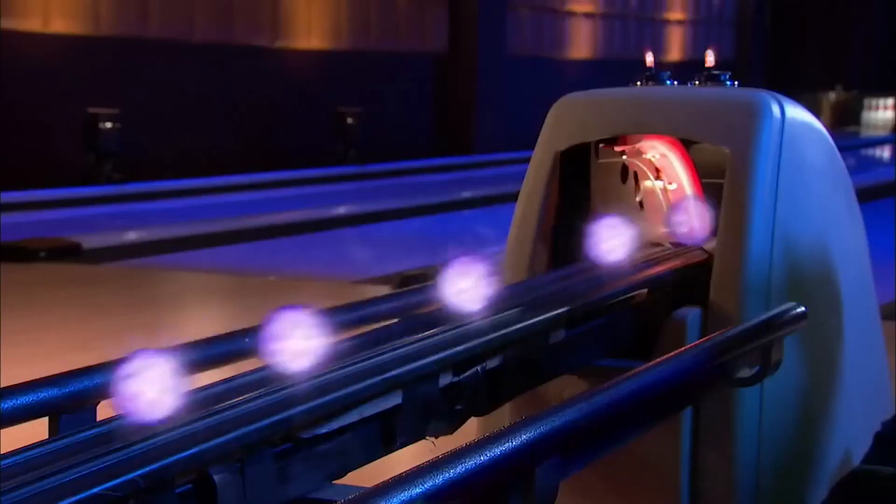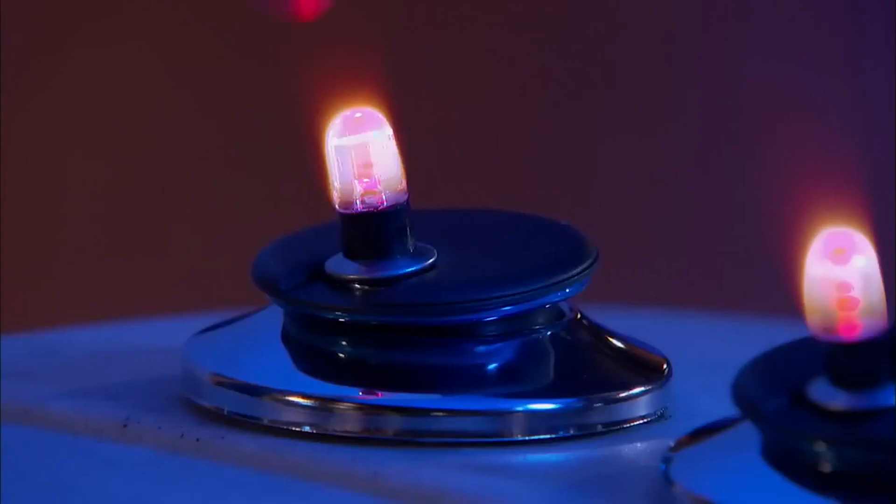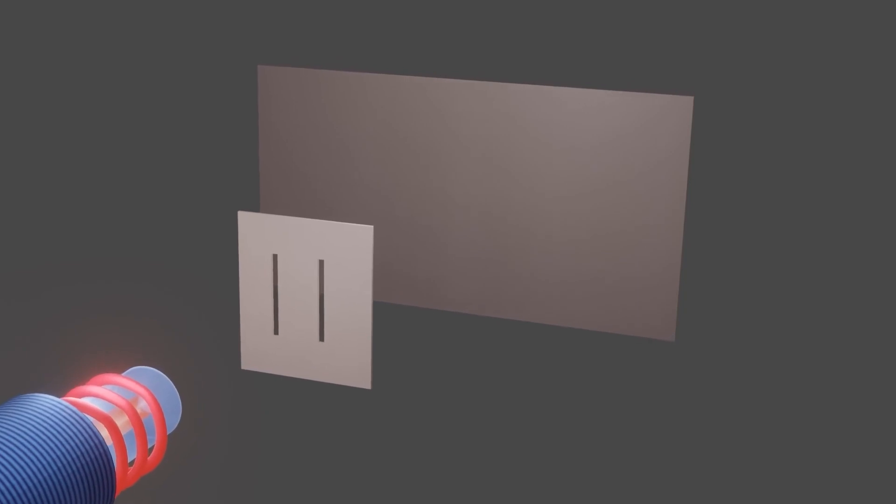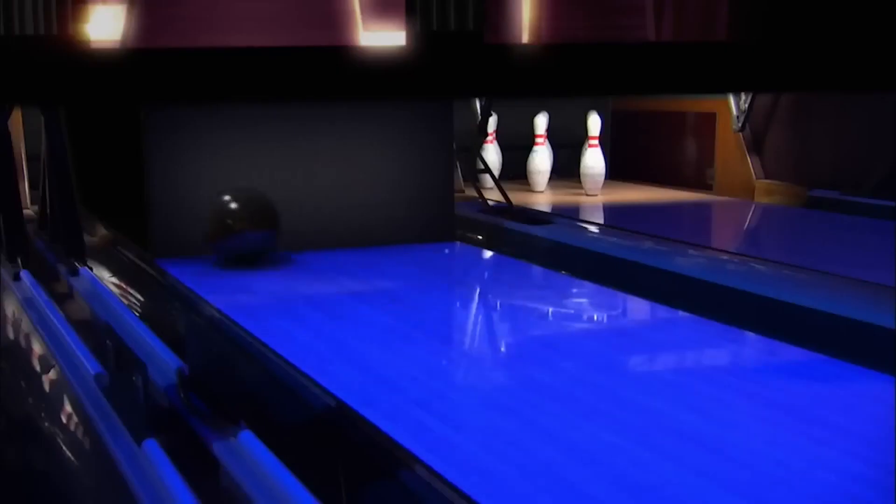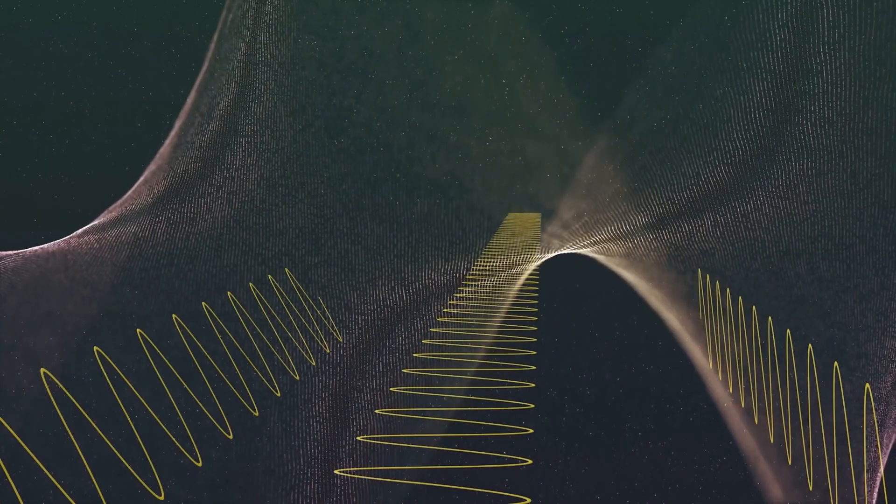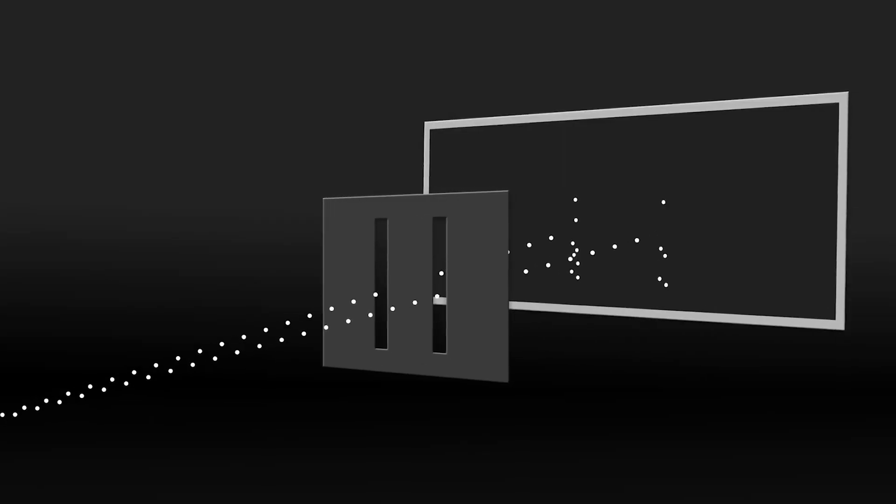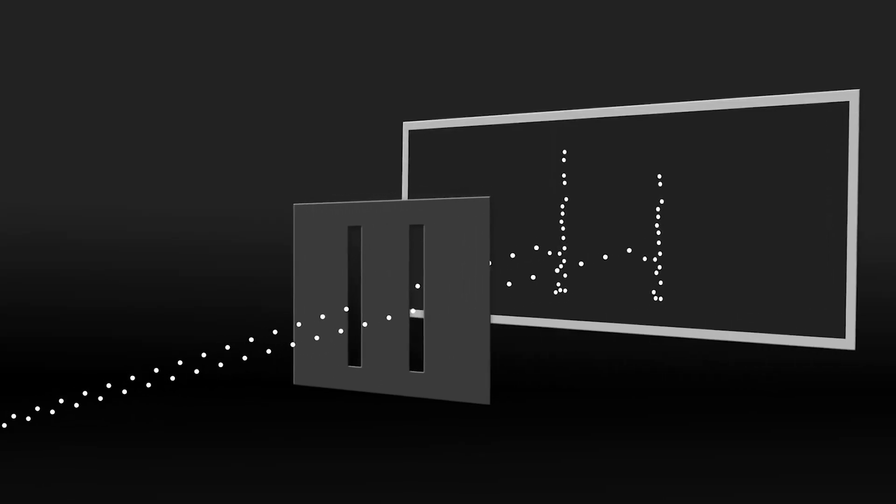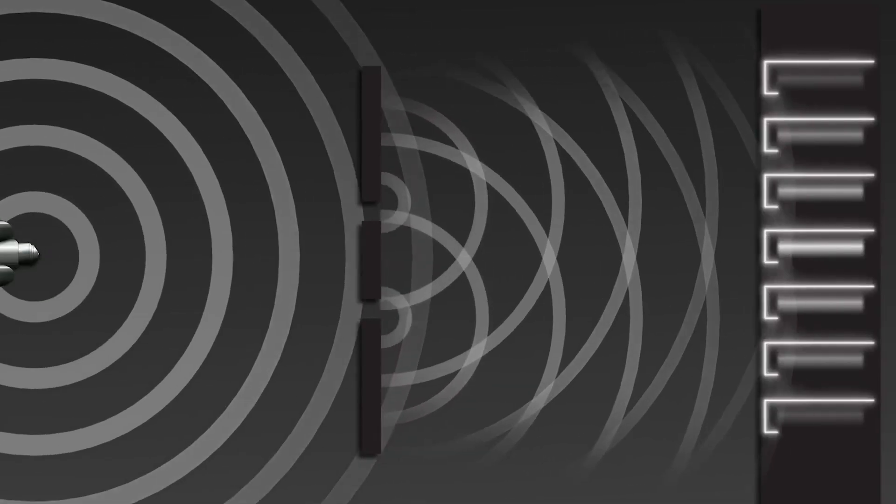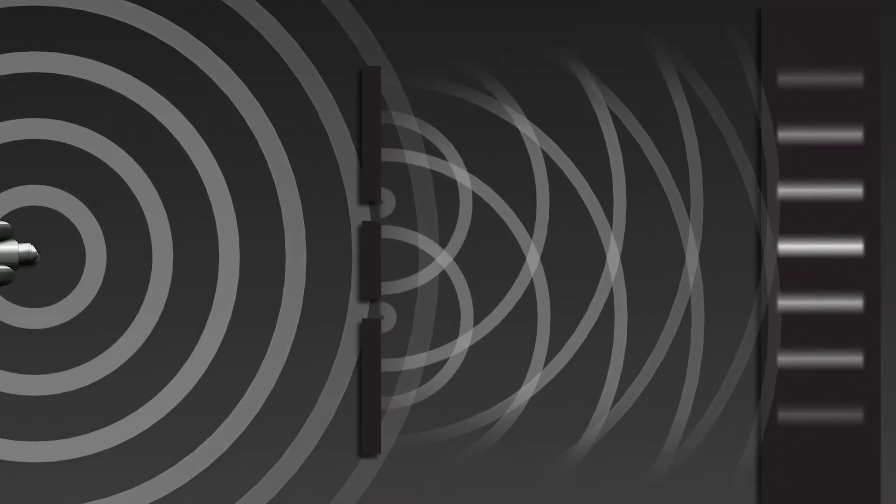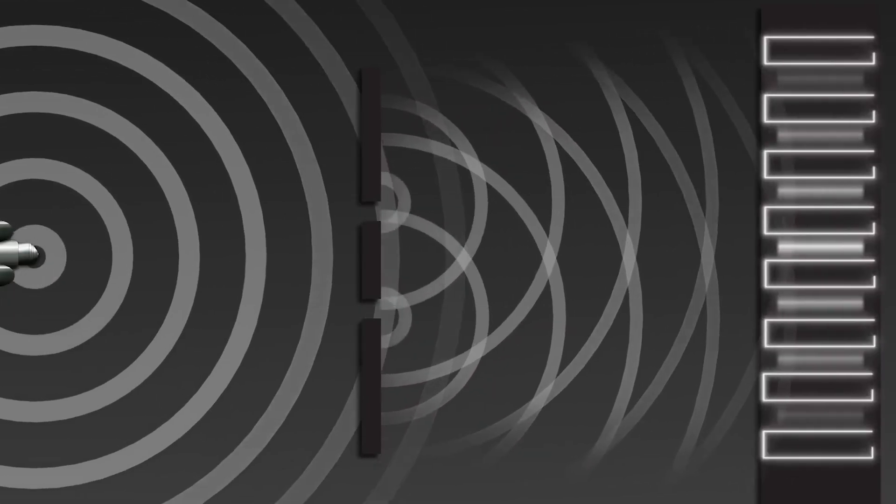In a world governed by classical physics, one would expect that electrons shot towards the two slits would produce two bands on the screen, corresponding to the slits. This is the behavior we'd expect from everyday objects, like throwing balls through two windows. However, when this experiment is conducted with quantum particles and both slits are open, the result is baffling. Instead of two bands, an interference pattern appears on the screen. This pattern of alternating dark and light bands suggests that the particles are behaving like waves that interfere with each other.